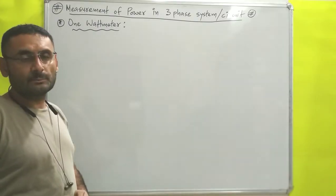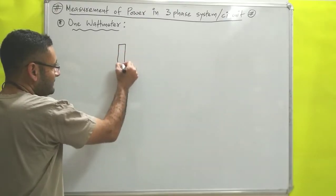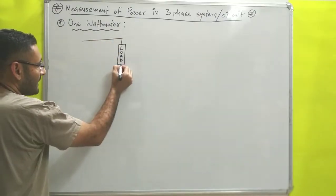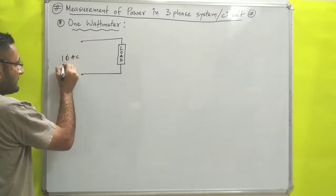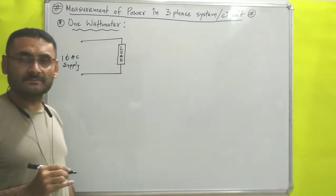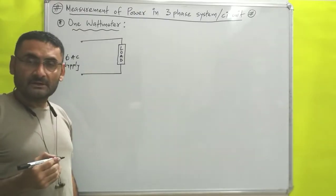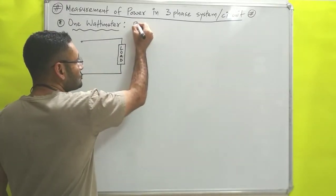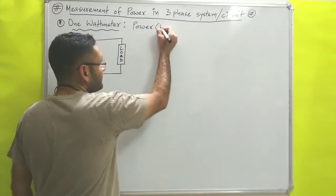Suppose one system is given to you in which a load is connected with a single-phase AC supply. If you want to find out the power of the system, you will take one wattmeter and then find out the power. A wattmeter is a device which is used to measure the power of the system, and its unit is watt.